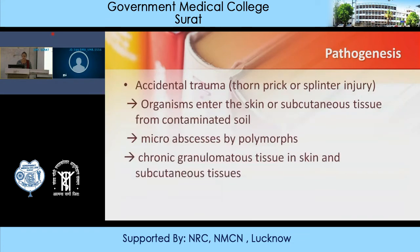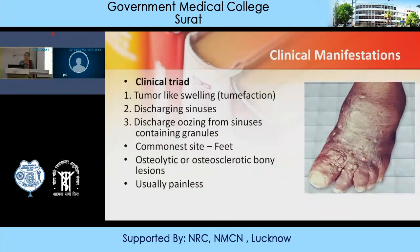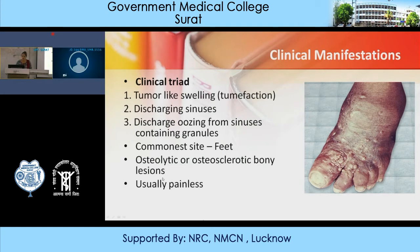Regarding pathogenic mechanisms, accidental trauma like a thorn prick or splinter injury leads to the organism entering the skin or subcutaneous tissue from contaminated soil. They form micro-abscesses with polymorphs and chronic granulomatous tissue. This is a chronic condition. The clinical triad consists of: a tumor-like swelling, presence of discharging sinuses, and discharge oozing from sinuses containing granules. By the color and consistency of the granules, we can identify the type of organism responsible. Osteolytic or osteosclerotic bony lesions are seen and are usually painless.